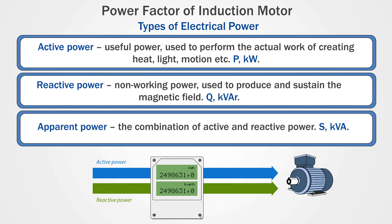The other type of power is reactive power. This is so-called non-working power. It doesn't perform useful work, but it's needed to produce and sustain the magnetic field to enable real work to be done. Reactive power is symbolized by the capital letter Q and is measured in kilovolt-amps reactive. And the last type of power is apparent power, that is the combination of both active and reactive power. Apparent power is measured in kilovolt-amps and is symbolized by the capital letter S.